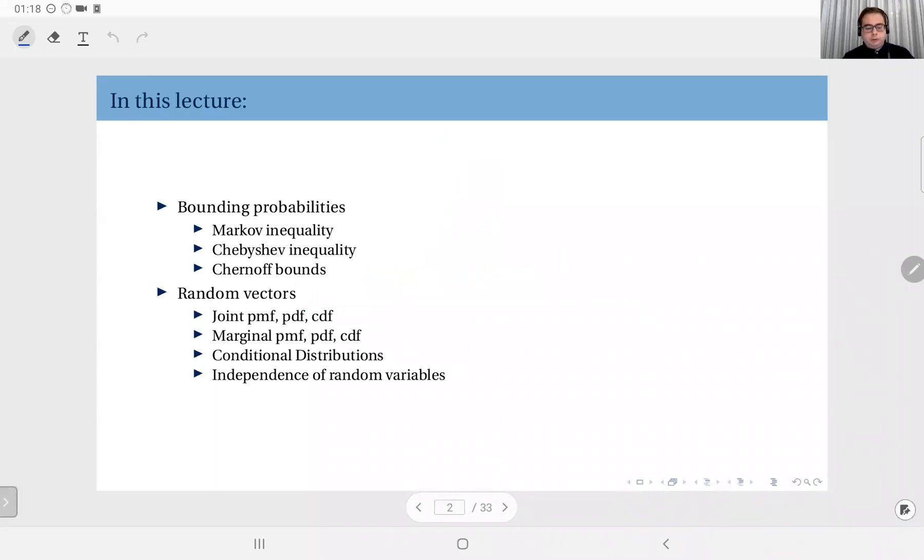This week we are talking about two distinct subjects. The first one is putting bounds on probabilities when we do not know exactly the distribution in most cases.